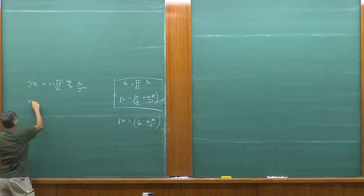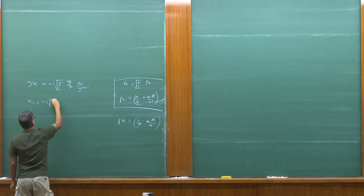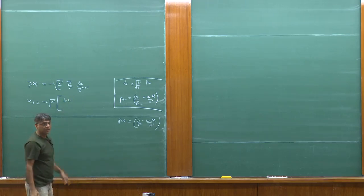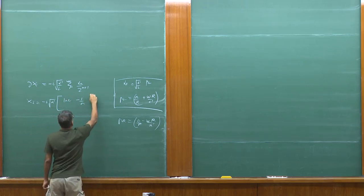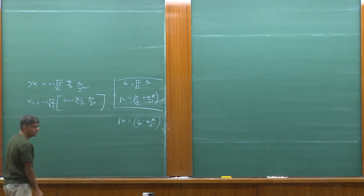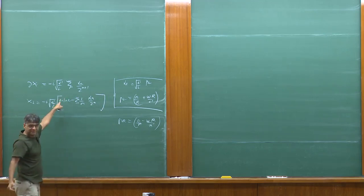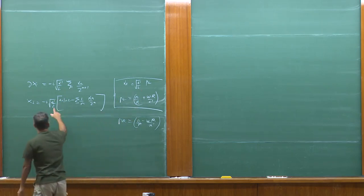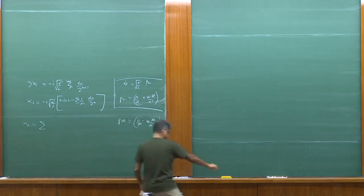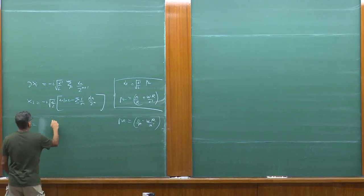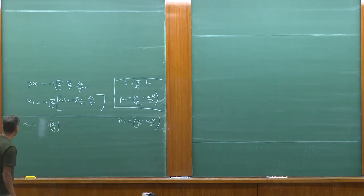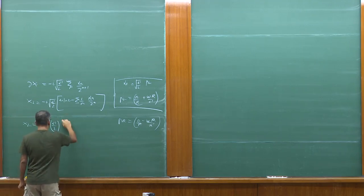Therefore, contribution only from x_left. So x_left is equal to... there's minus i by square root alpha prime. Then we integrate the alpha 0 guy, that gives us log z. We integrate the remaining guy, that gives us minus 1 over m alpha m over z to the power m, sum over m. And putting back what alpha 0 was, we see we get x_L equals...